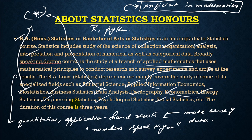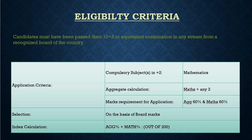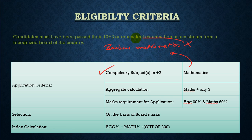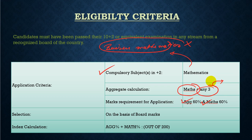The duration of the course is three years. The eligibility criteria comprise: you must have mathematics as a subject — business maths will not do, so that is a complete no. You need to have at least an aggregate of 60%, and in mathematics specifically you must have 60%. The aggregate is calculated as maths plus any best three subjects.